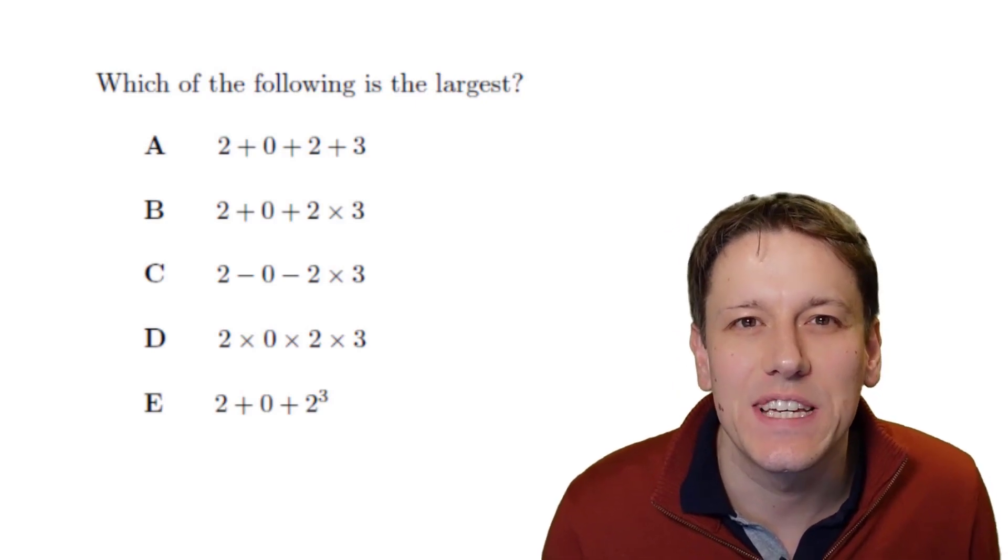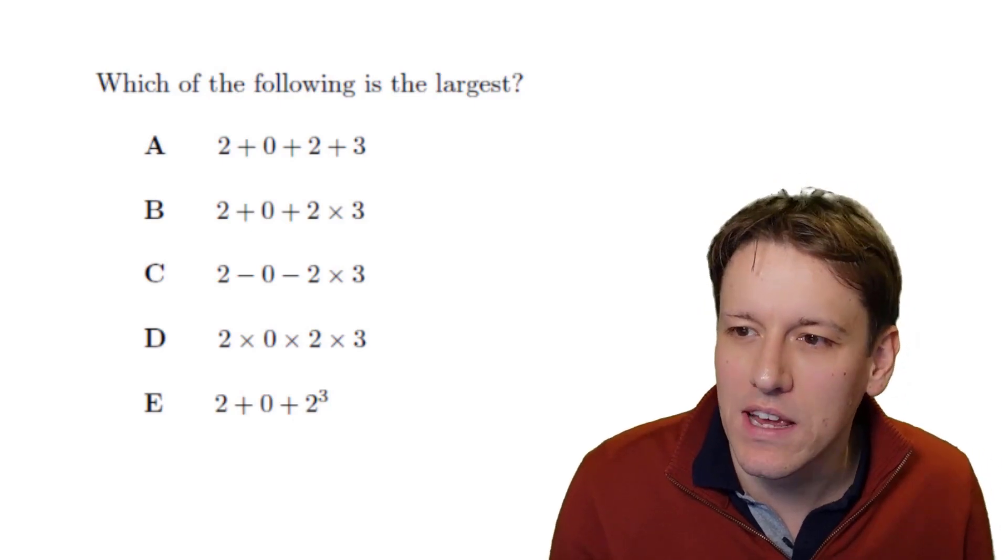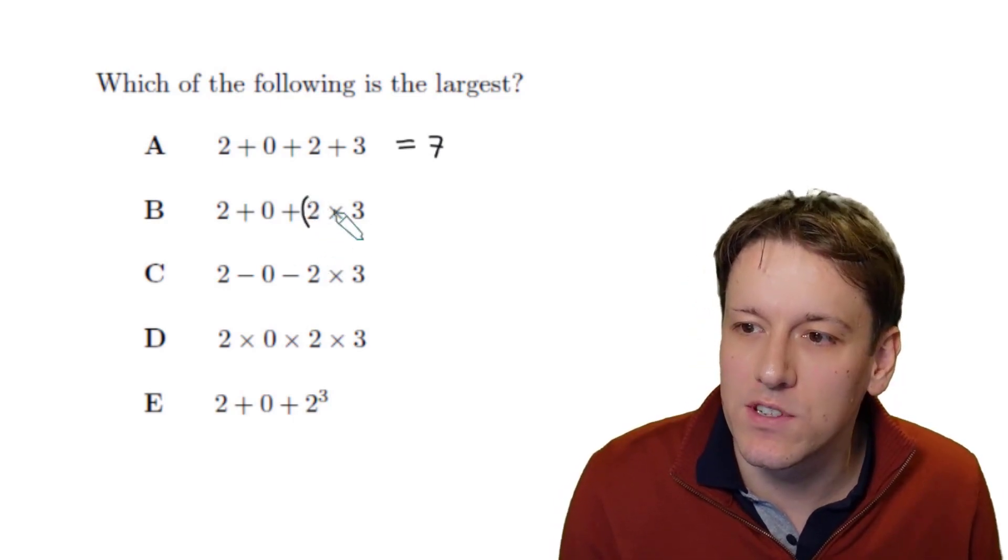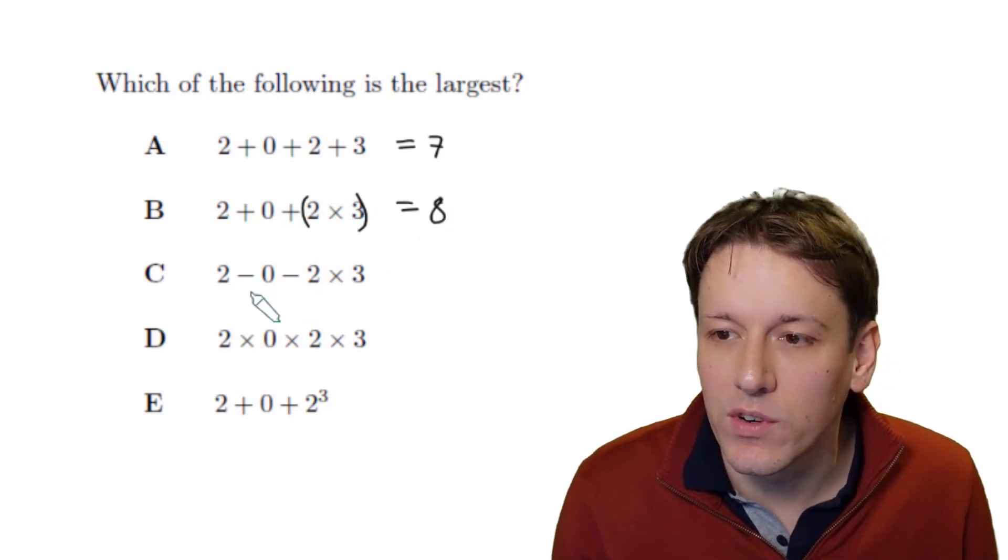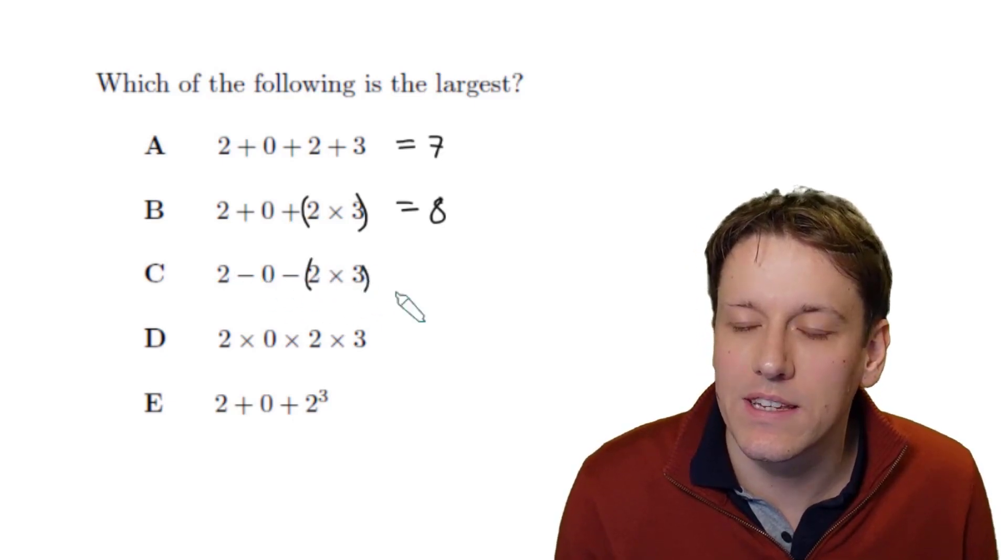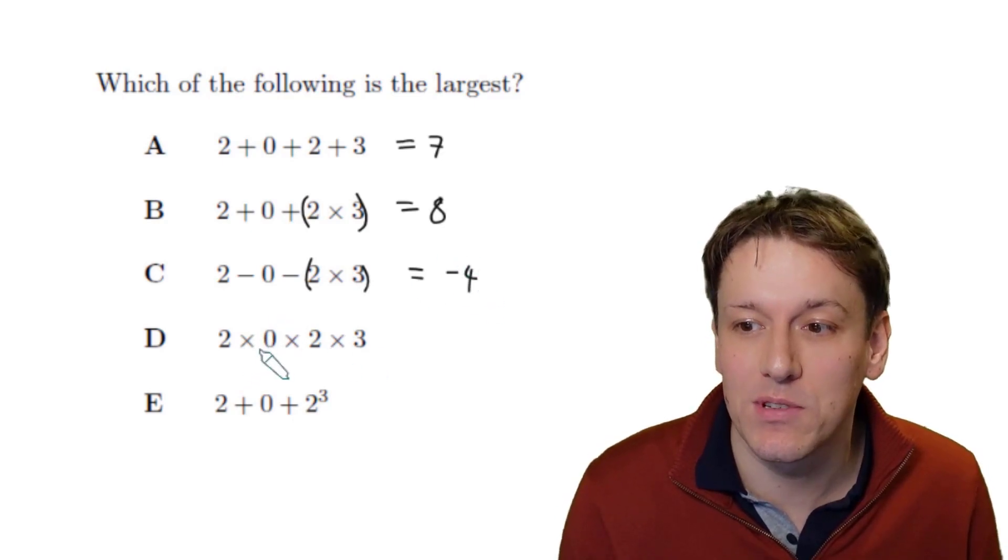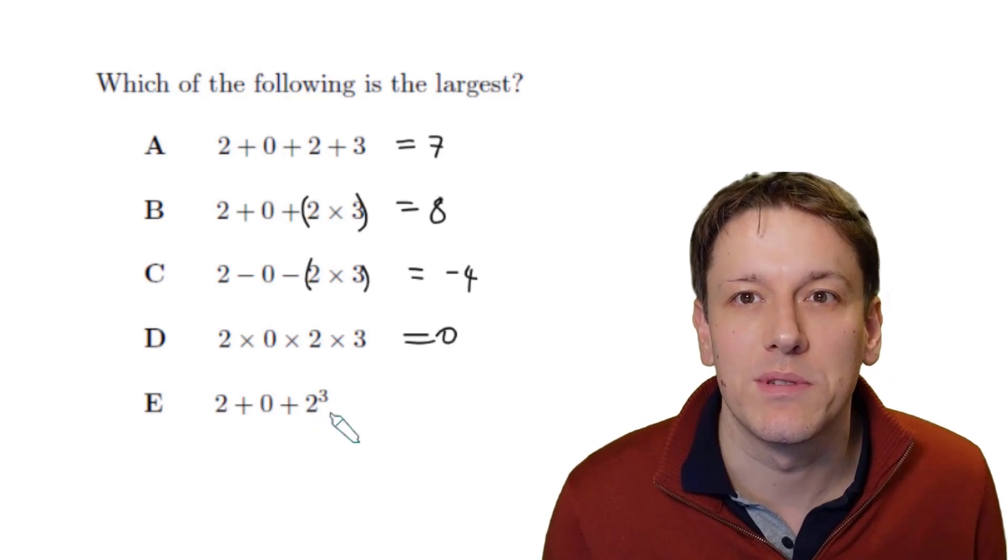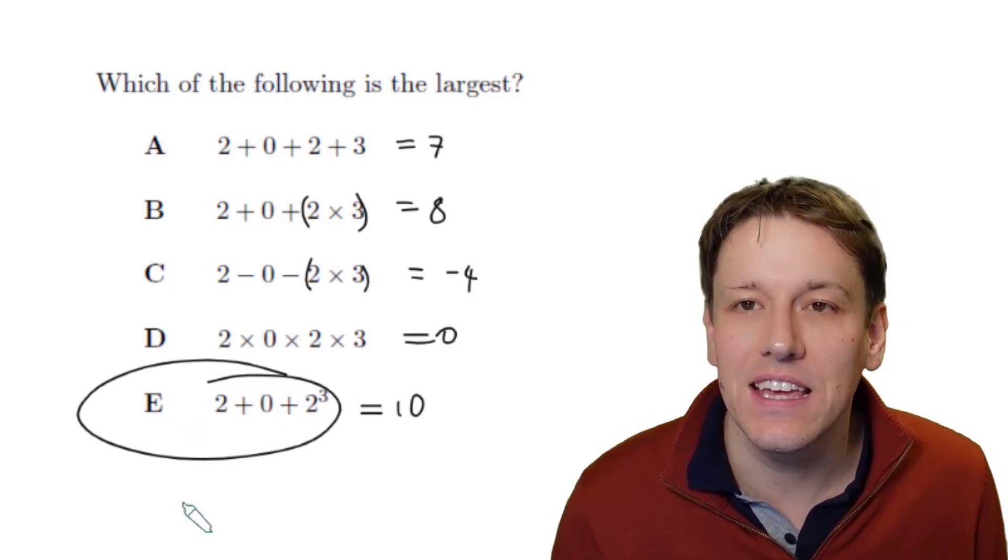Which of the following is the largest out of these expressions that all contain 2023? Well the first one A, 2+0+2+3, that's just 7 of course. 2+0+2×3, by BIDMAS we have to do the multiplication first, so it's 2+6 which is 8. In C we've got 2-0-2×3, so it's again multiplication first, 2-6 here, that gives us -4. Could be tripped up by D if you're not careful, 2×0×2×3, it's just 0 because it's something multiplied by 0. And the last one, 2+0+2³, well 2³ is 2×2×2 which is 8, so this is 2+8 which is 10, and so the answer here is E, that's the largest one.